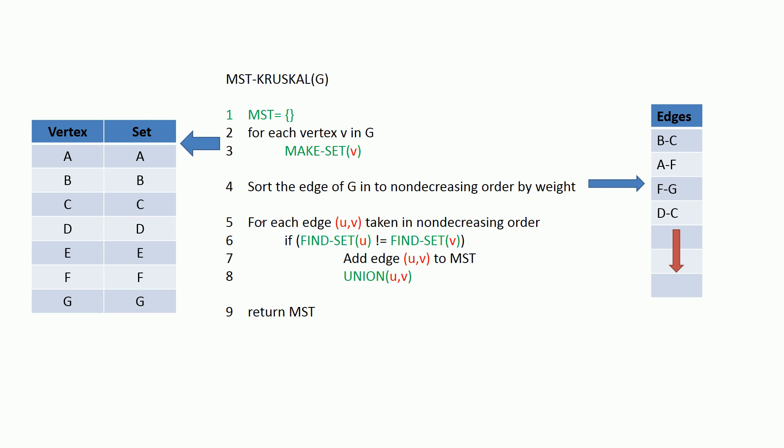Then all we do is take a remaining minimum weighted edge and for that edge we are going to find the end vertices' sets. If those are not equal then we can add that edge to our MST set and then union the sets that those two end vertices belong to. And finally we are going to return our MST set, the completed minimum spanning tree for this graph.